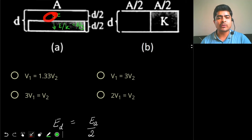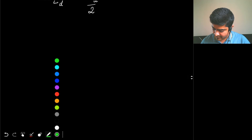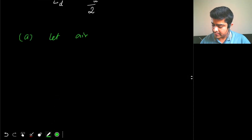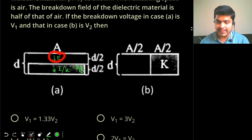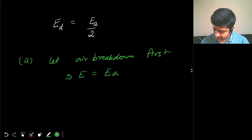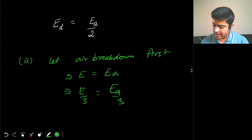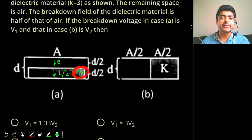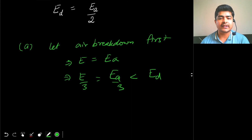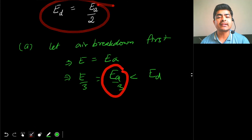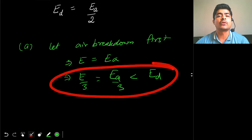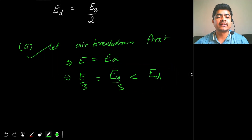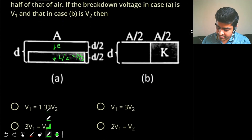We know E_D = E_A / 2. There are two possibilities: either air breaks down first or the dielectric breaks down first. Assume air breaks down first in case A, so E = E_A. Then the field in the dielectric is E_A / 3, which is less than E_D = E_A / 2. Since E_A / 3 < E_A / 2, the dielectric has not yet reached its breakdown strength. This confirms the assumption: air breaks down first in case A.